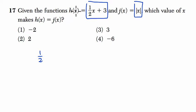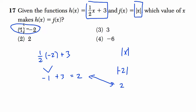So if we have h of x when x is negative 2, it's 1 half times negative 2 plus 3, and that is simply negative 1 plus 3, which is 2. And if I plug in negative 2 to the absolute value of x, we get the absolute value of negative 2, that's also 2, and these two things are equal. So we found our answer quickly by plugging in. That's one way to do it.